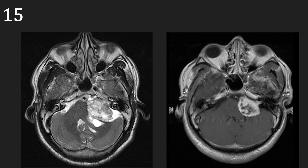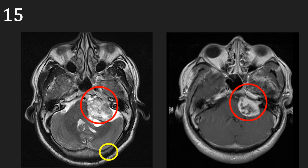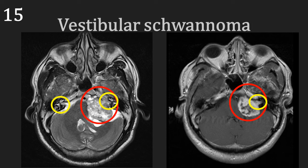Our next two cases are also of mass lesions; however, the history and anatomy will help us narrow down the diagnosis even further. Here is a 44-year-old male patient who presented with left-sided sensorineural hearing loss. We can easily appreciate the large irregular mass lesion compressing the brainstem and the cerebellum on the left-hand side. What will help us is identifying the key structures adjacent to it and where we would expect the normal structures to be. Here are the cochlear and semicircular canals, highlighted in yellow. On the right-hand side, we can easily appreciate the vestibulocochlear and facial nerves. However, on the left-hand side where the mass exists, we cannot see the nerves. This leads us to the diagnosis of vestibular schwannoma.